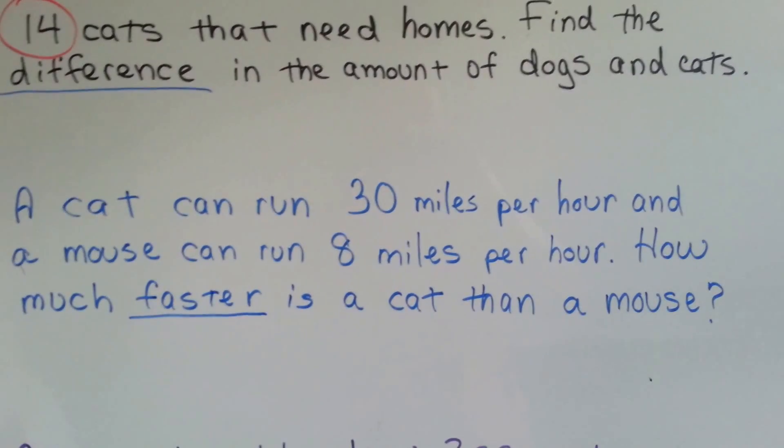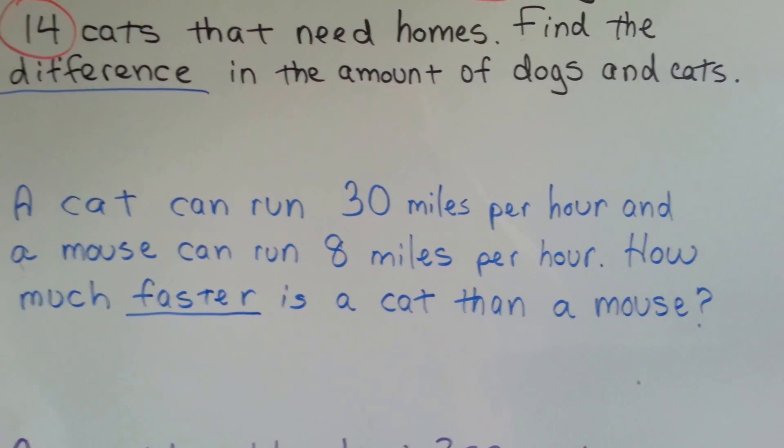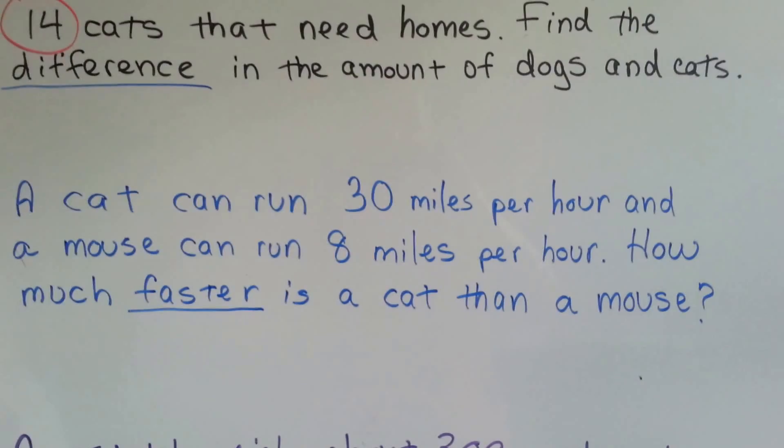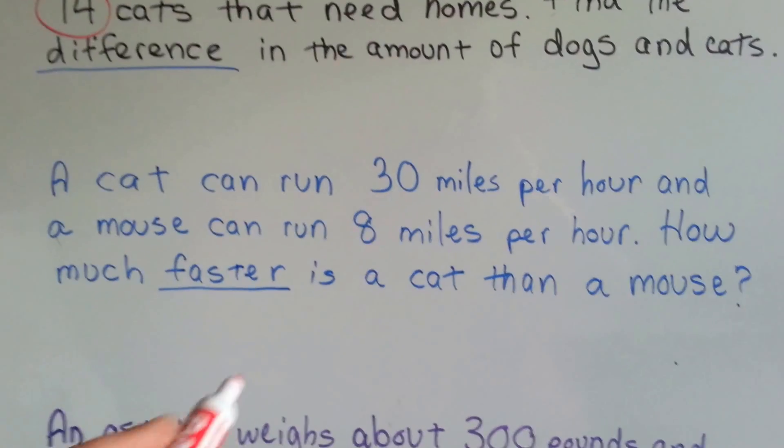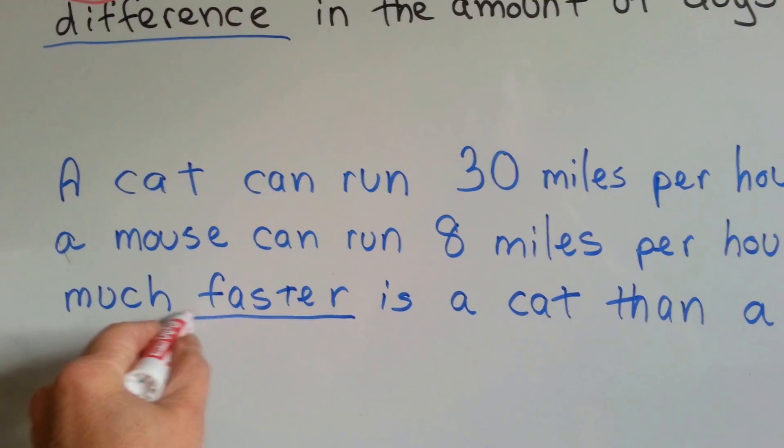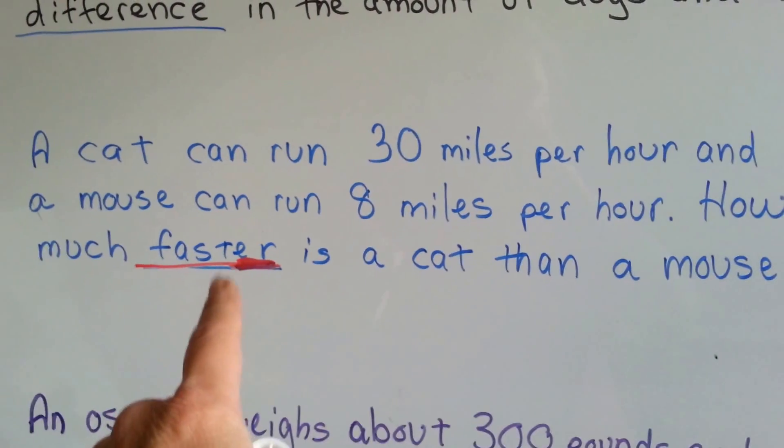Try this one. A cat can run about 30 miles per hour and a mouse can run about 8 miles per hour. How much faster is a cat than a mouse? Here's our ER word. Faster. It ends with the ER right here. That tells us we need to do subtraction.